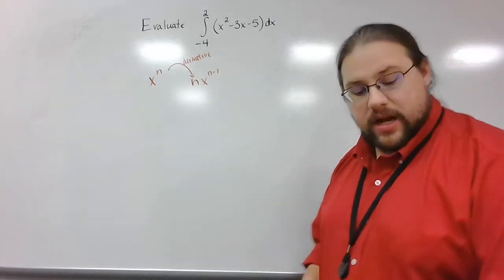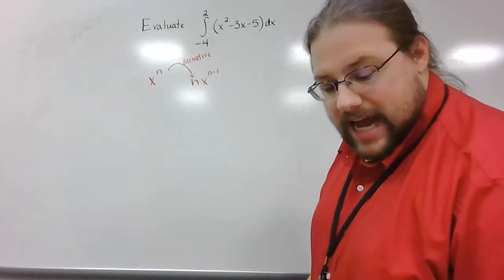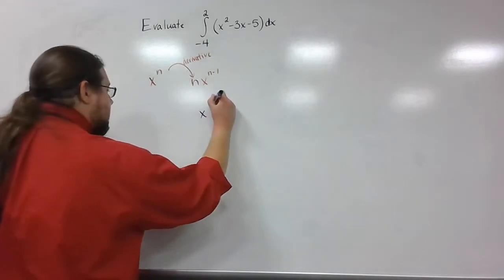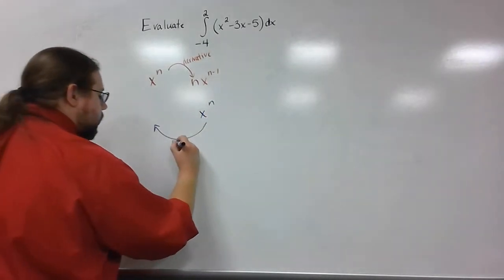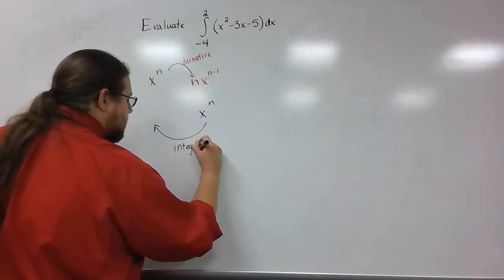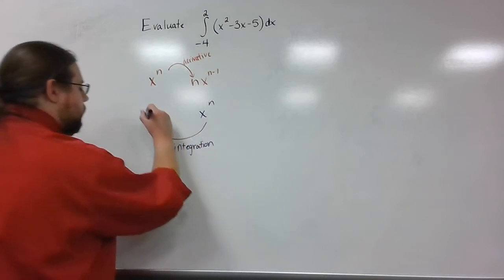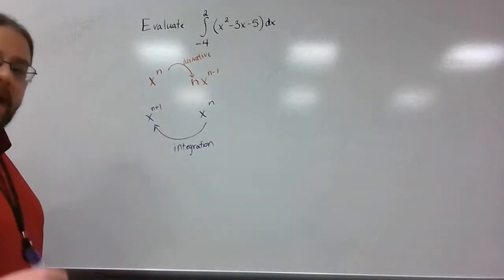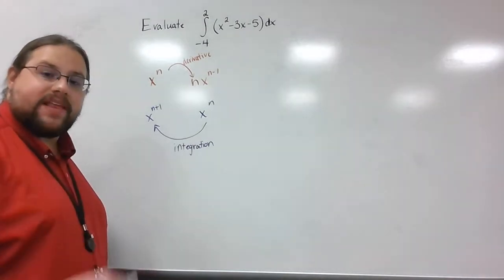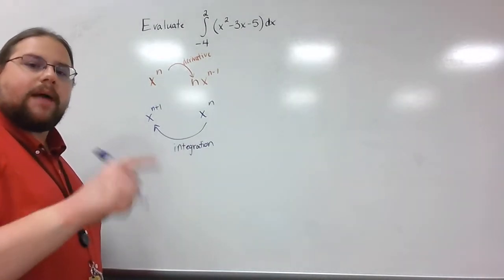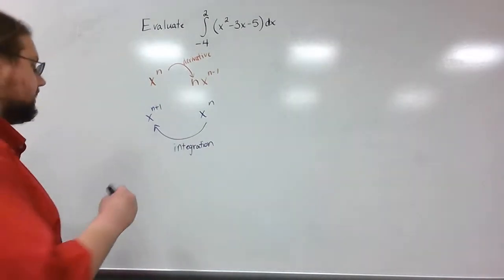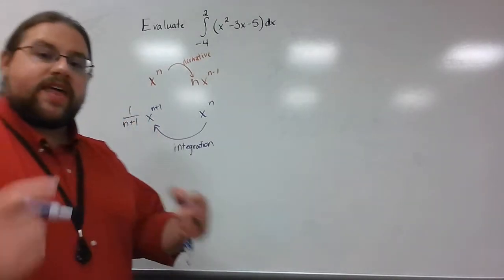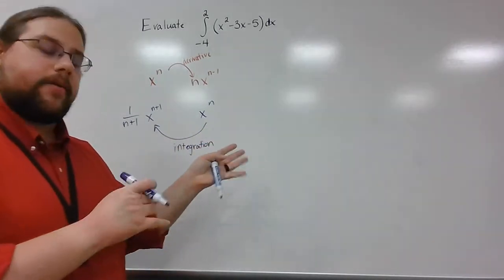Now I want to do the exact opposite. I'm going to take x to the n, and instead of going down by 1 in the exponent, I'm going to go up by 1 — so it becomes x to the n plus 1. And instead of multiplying by the old exponent, I'm going to divide by the new exponent. That's the process I'm going to employ here.